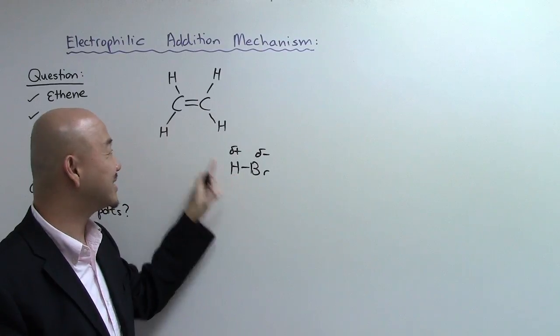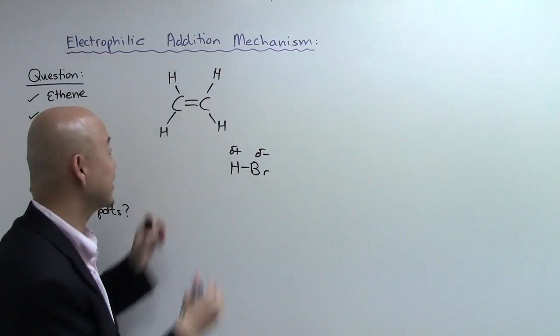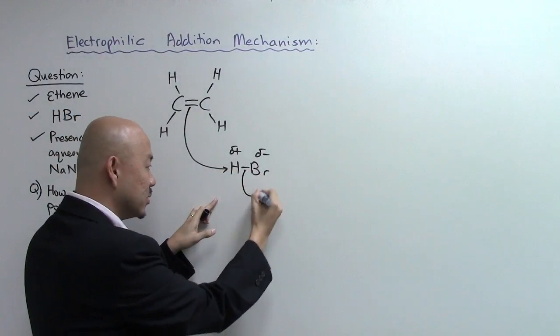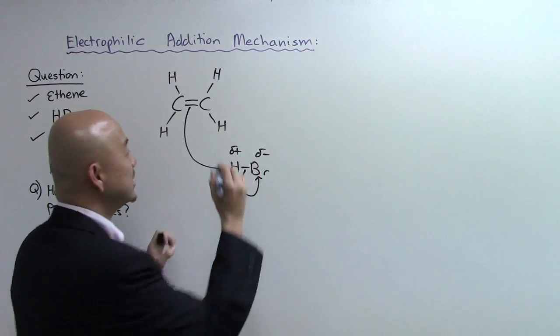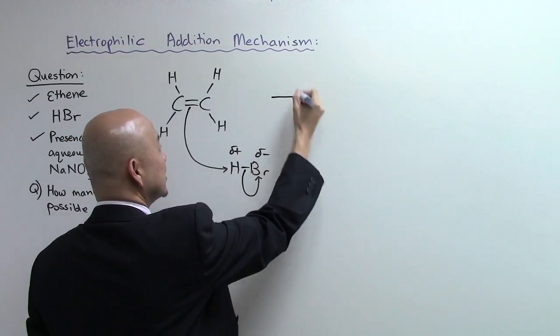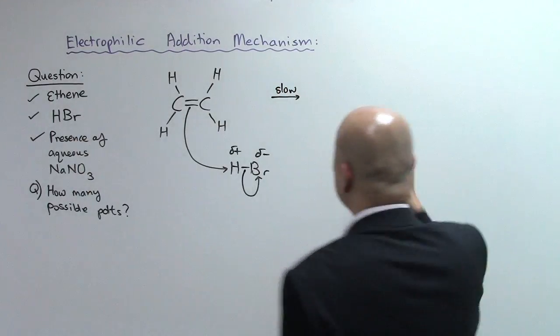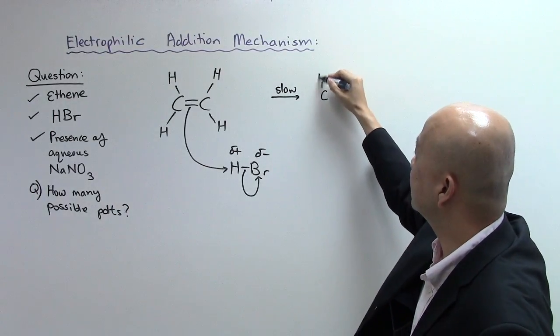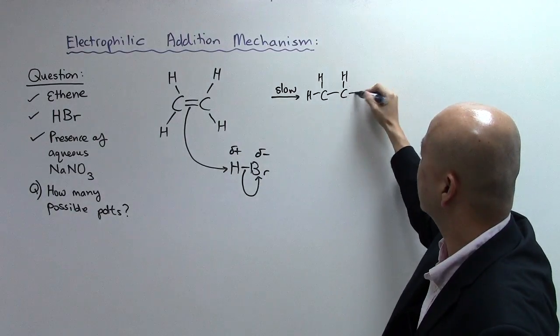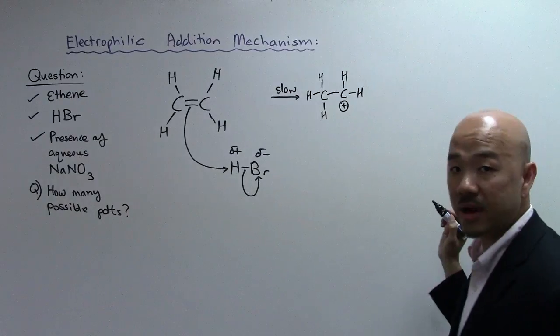And it will attack the pi electrons in the pi bond here. So this will attack and there will be shifting of this bond pair over here. And this is known as the first step, known as the slow rate determining step. And then you'll get this carbocation intermediate. Let me show you over here. This is a carbocation intermediate.